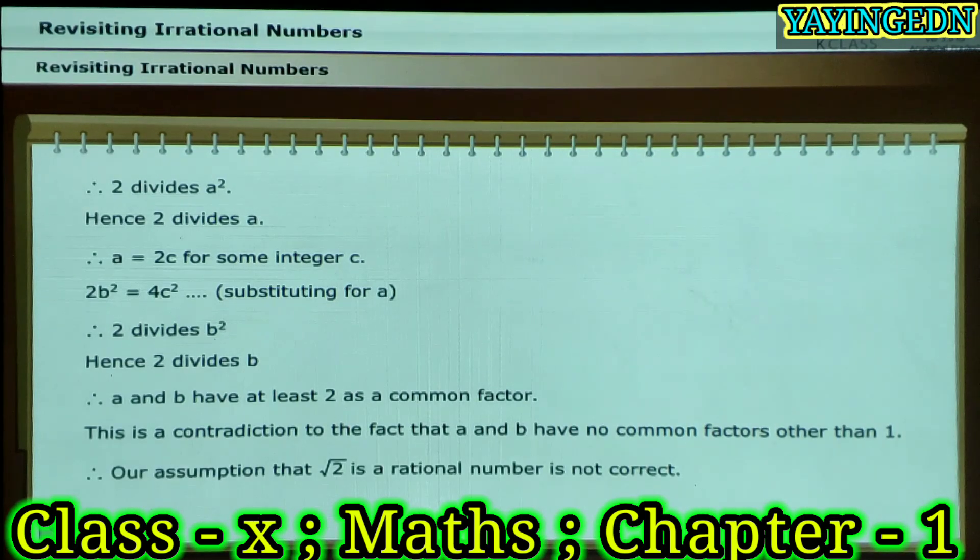Therefore, our assumption that square root of 2 is a rational number is not correct. Thus, square root of 2 is an irrational number.